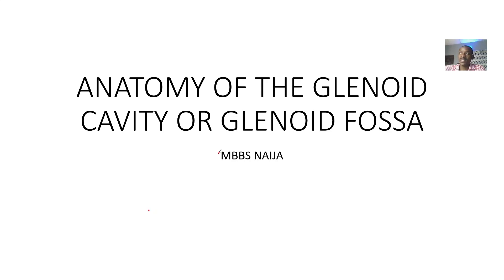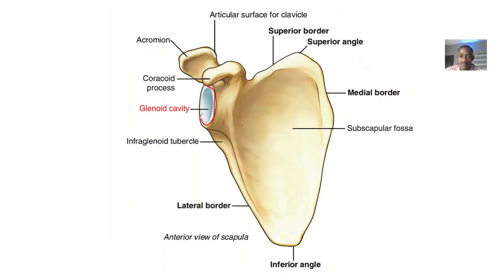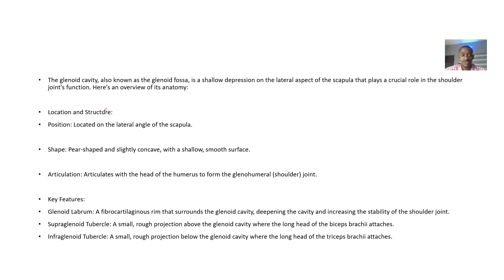We'll be talking about the anatomy of another part of the shoulder joint, known as the glenoid cavity, or some people call it the glenoid fossa. Just like the name implies, it's like a cavity — a deepening on the lateral side of the scapula, because the head of the humerus fits into this deepening. The glenoid cavity is a shallow depression on the lateral aspect of the scapula that plays a crucial role in shoulder joint function.